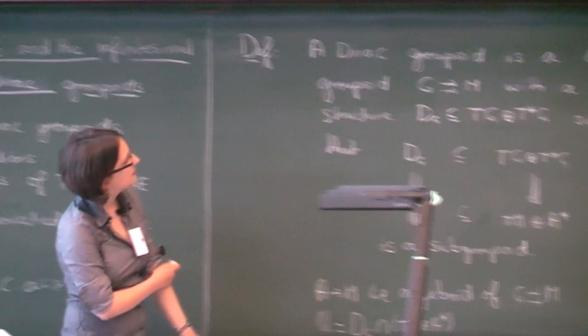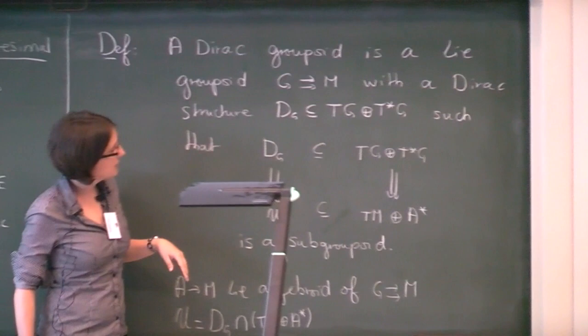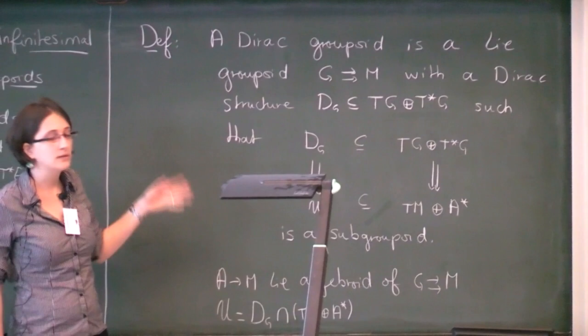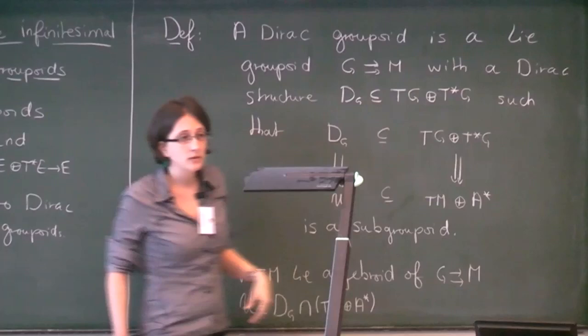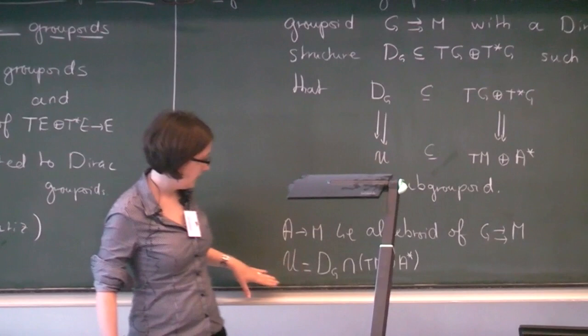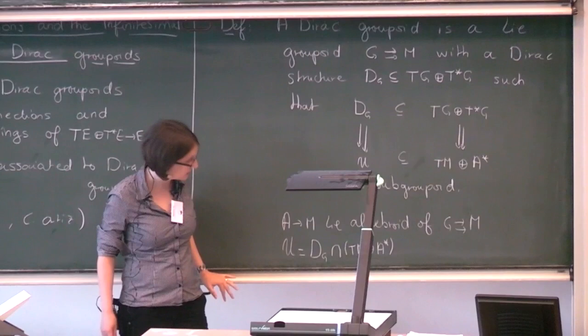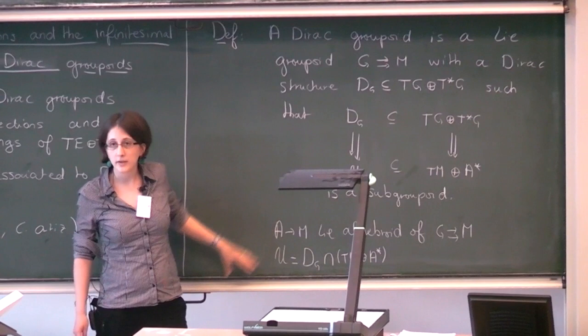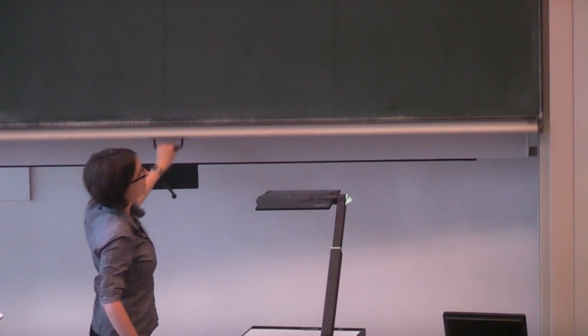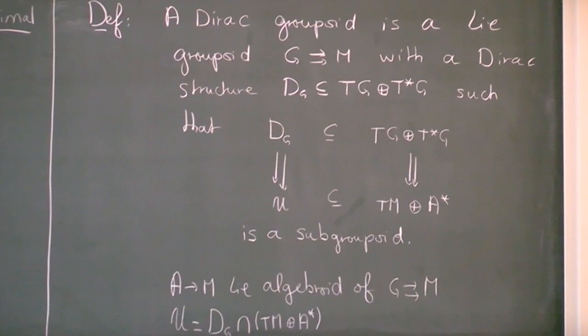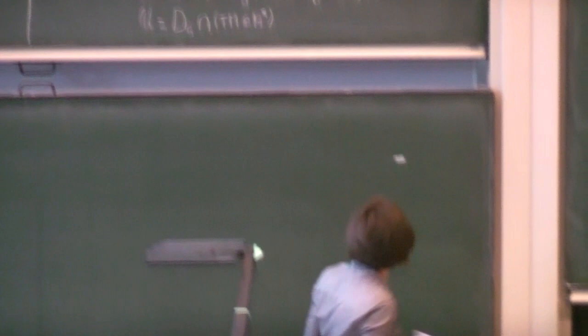A Dirac group point is just a Lie groupoid G over M with a Dirac structure — a sub-bundle of TG plus T*G — such that the Dirac structure itself is a subgroupoid of a bigger groupoid associated to the Lie groupoid. The set of units of the Dirac structure is the intersection of the Dirac structure with the units of this bigger groupoid. I will always write A over M for the algebra of my Lie groupoid.